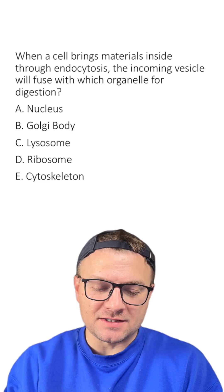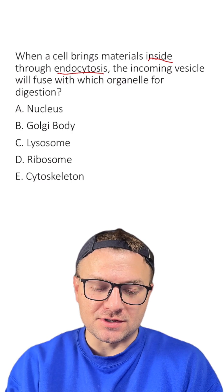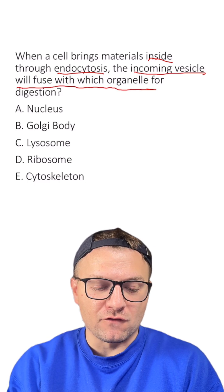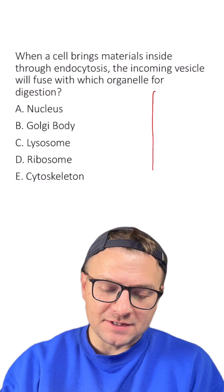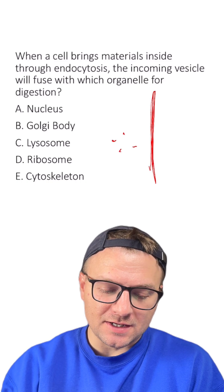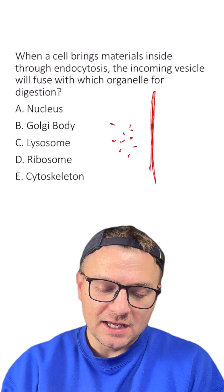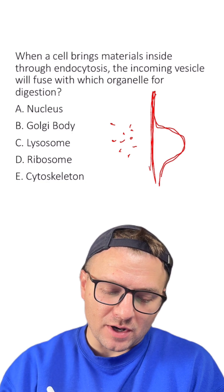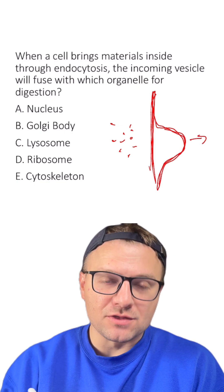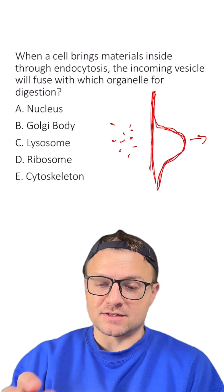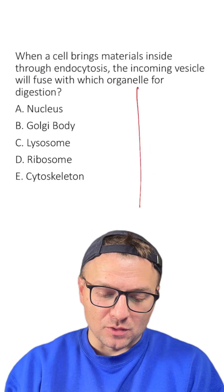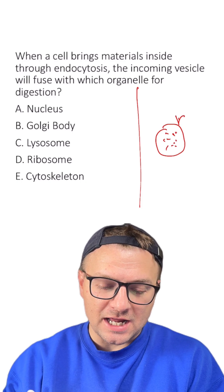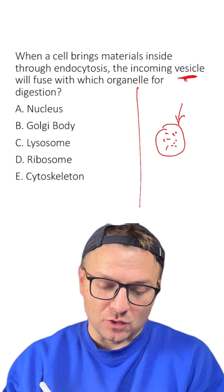When a cell brings materials inside through endocytosis, the incoming vesicle will fuse with which organelle for digestion? Remember that we have the cell membrane, and sometimes what the cell does to bring materials inside is it will engulf those materials around a membrane and bring them in through a process called endocytosis. What it looks like afterwards is these materials will be surrounded by their own membrane, and again, this is called a vesicle.